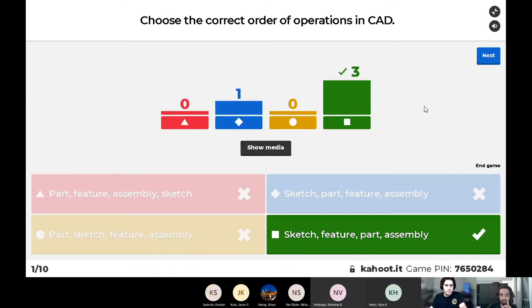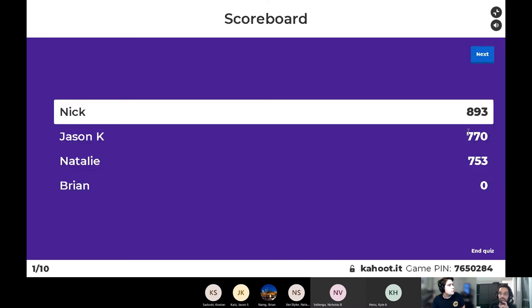Can everyone see the game pin? Can see it. Choose the correct order of operations in CAD. This is a general overview. It looks like you're basically red and black in CAD. It is sketch, feature, part, and assembly. Part sort of refers to the part as a whole, whereas feature means features of a part, which is why you do feature before a part.